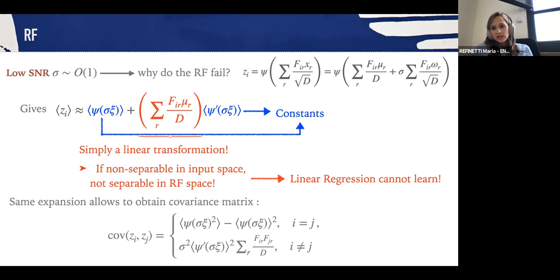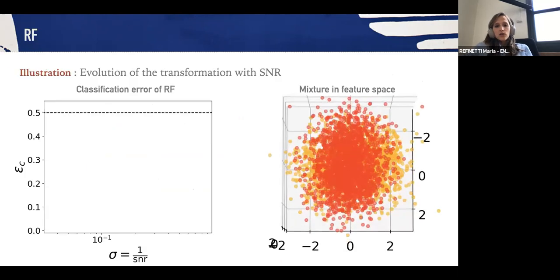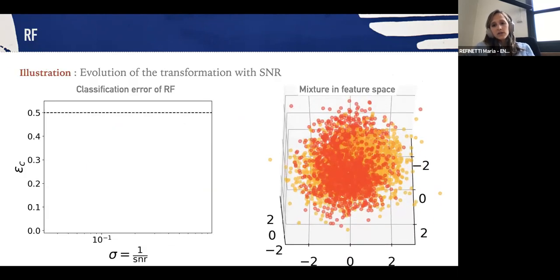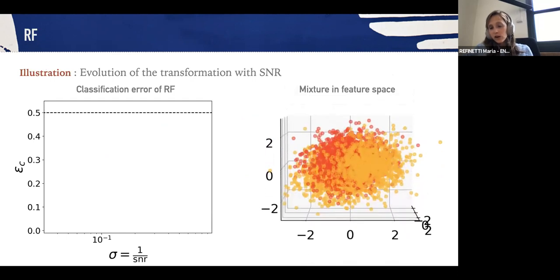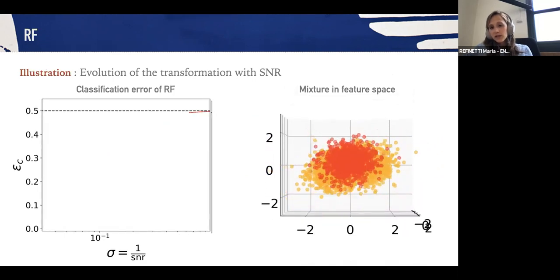Doing a similar expansion, we can also find the covariance matrices of the features and see that they have a Marchenko-Pastur form. This is an illustration that basically shows that if the signal-to-noise is too low, then the mixture in feature space remains non-separable and that the random features actually require very high signal-to-noise ratio in order to be able to separate this mixture.